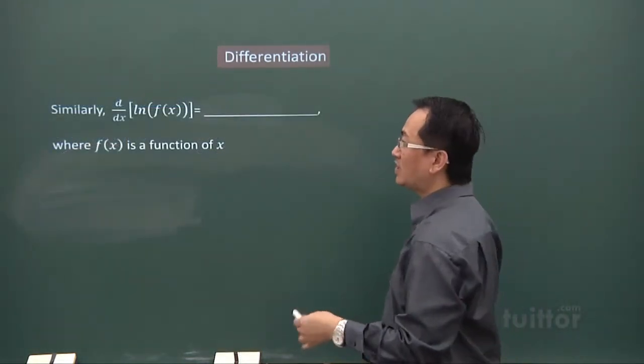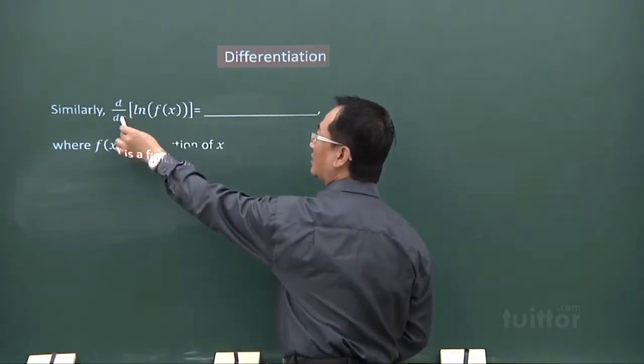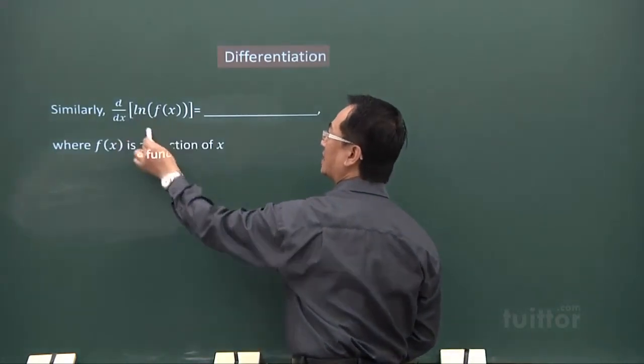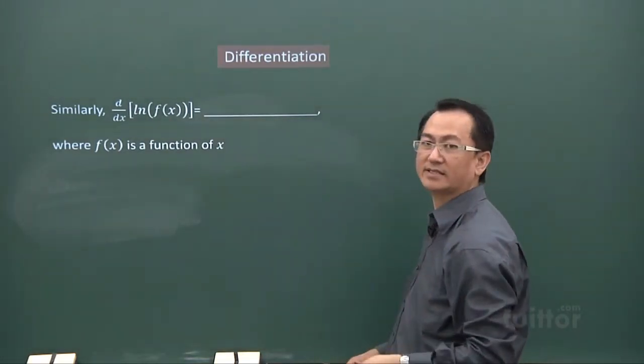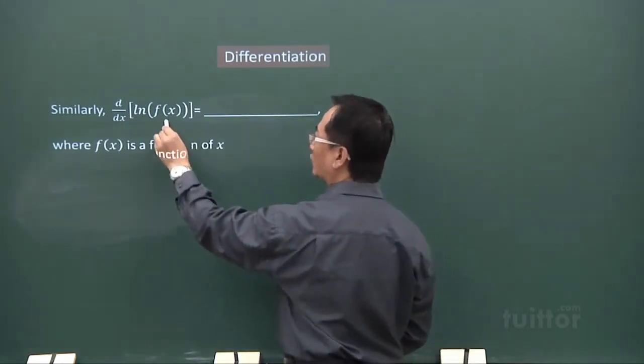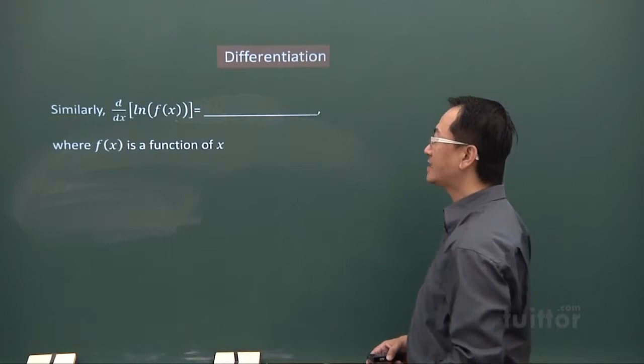Now, write the expression slightly differently. You have d over dx. This ln expression. ln bracket f(x). So, instead of having a u here, now I have f(x). Same thing.